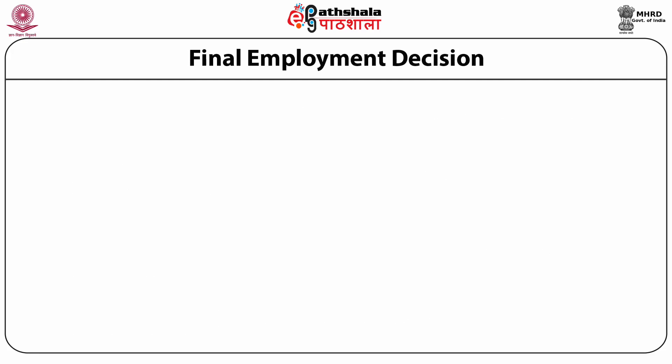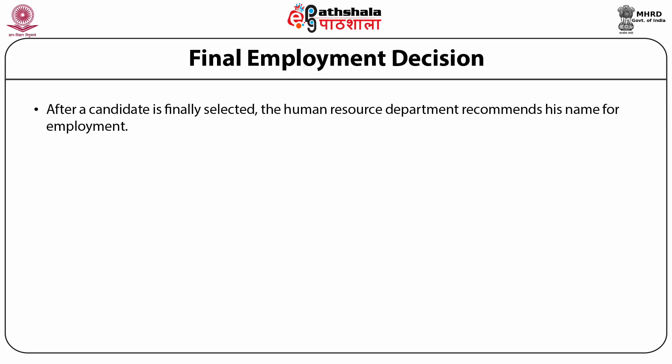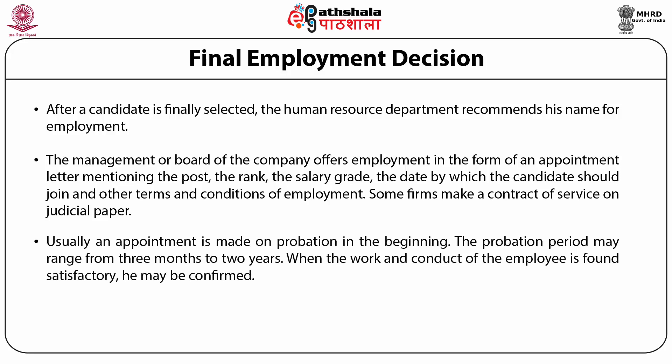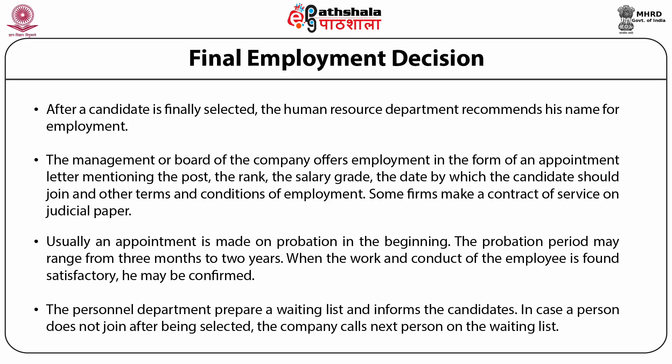After approval from authority, the next step is making the final employment decision. After a candidate is finally selected, the human resource department recommends his name for employment. Management or the board offers employment in the form of an appointment letter mentioning the post, rank, salary grade, the date by which the candidate should join, and other terms and conditions of employment. Some firms make a contract of service on judicial papers. Usually an appointment is made on probation, which may range from 3 months to 2 years. When the work and conduct of the employee is found satisfactory, the employee may be confirmed. The personnel department prepares a waiting list and informs the next candidate if a selected person does not join.